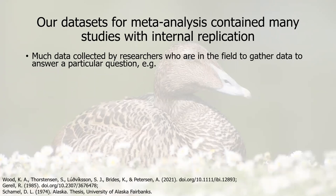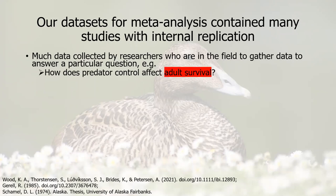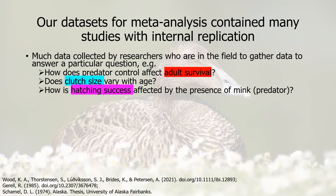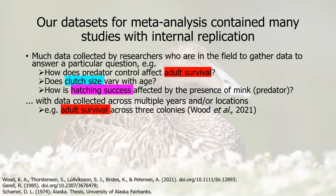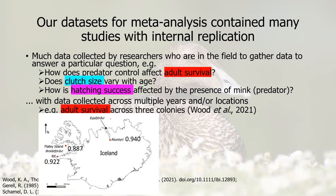Our datasets for these vital rates contain many studies with internal replication. Much data collected by researchers in the field is gathered to answer a particular question — for example, how does predator control affect adult survival, how does clutch size vary with age, or how is hatching success affected by the presence of predators such as mink? Often they will have data collected across multiple years and/or locations. For example, Wood et al. 2021 has adult survival studied across three colonies, as you can see here.